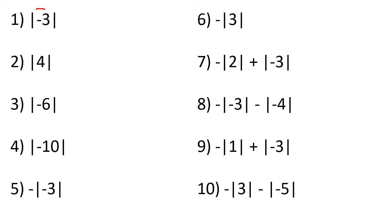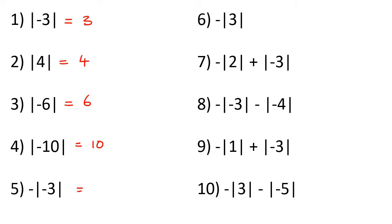For number 1, the answer must always be positive when it's inside an absolute value. So the answers are just 3, 4, 6, and 10. Now with this one, there is a negative in the front. What you do not want to do is multiply this negative inside — that is not allowed. You first work out the part inside the absolute value, which gives 3, but then the negative stays in the front, so the answer is negative 3.